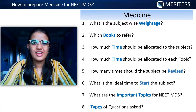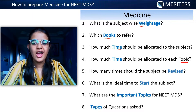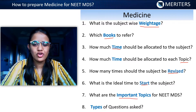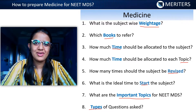Whenever you start preparing, you have certain doubts like: what is the weightage of the subject, which books to refer for the subject, how much time should be allocated to this entire subject and what should be the topic-wise distribution, how many times should this subject be revised, when is the ideal time to start this subject, what are the important topics for your NEET exam, and what are the types of questions that are asked in your exam. Let's solve these doubts one by one.